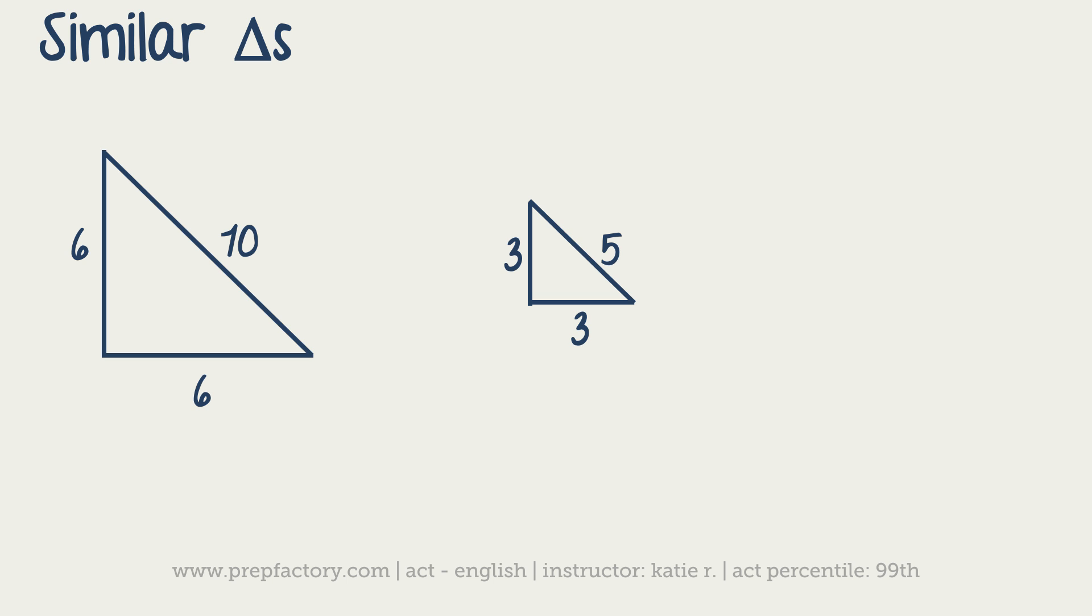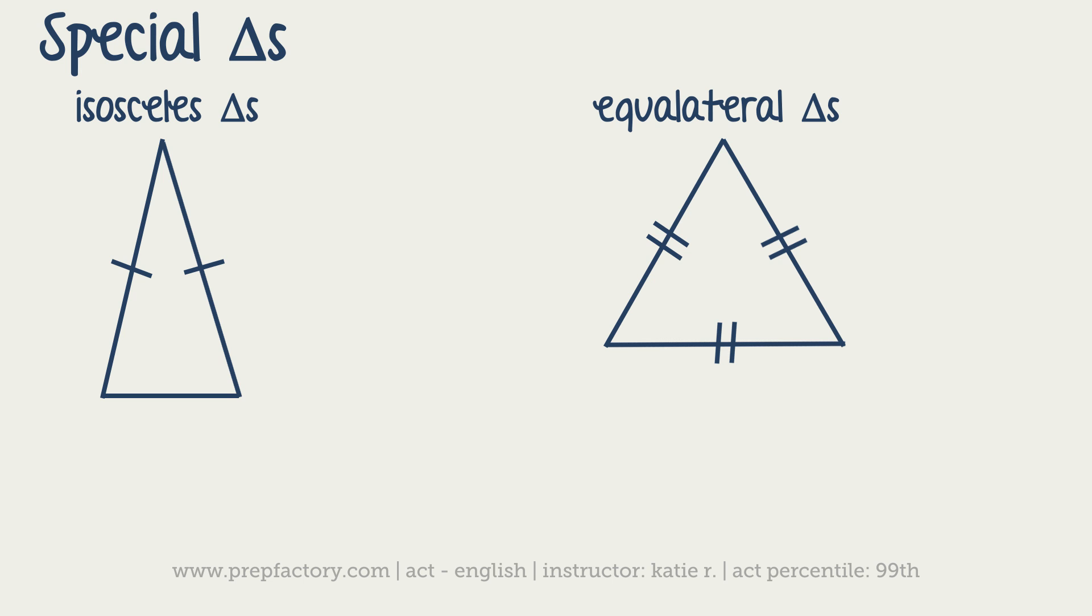Alright, let's go ahead and take a look at some more special triangles. And the two special triangles you're going to run into all the time are isosceles triangles and equilateral triangles. So, in an isosceles triangle, two of the sides and, therefore, two of the angles have to be equal to one another. So, two sides and the angles that are opposite from them are equal. And in equilateral, all three sides and, therefore, all three angles are going to be equal.